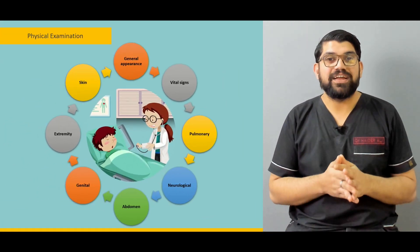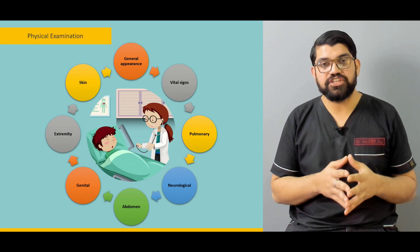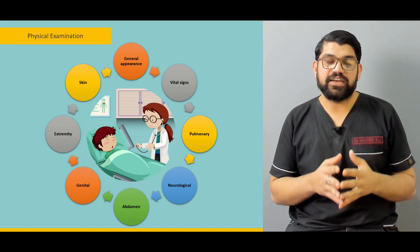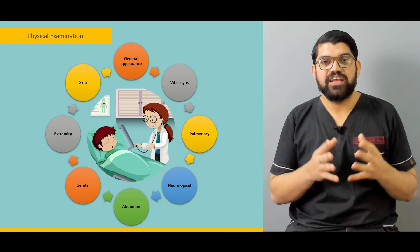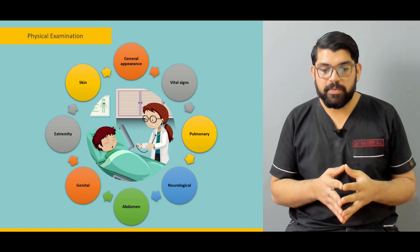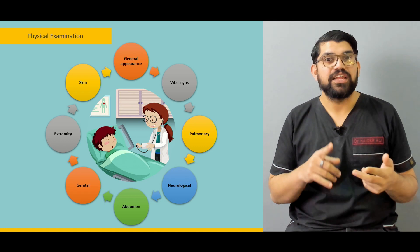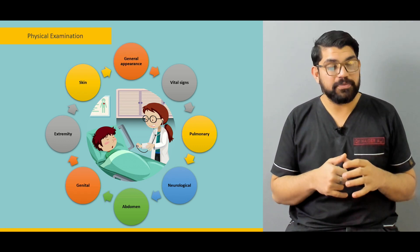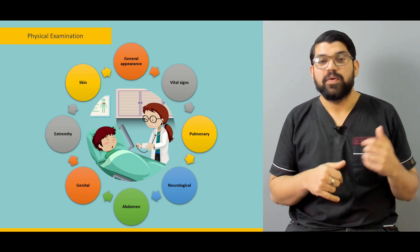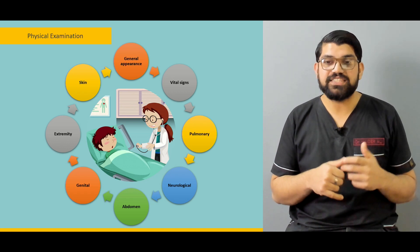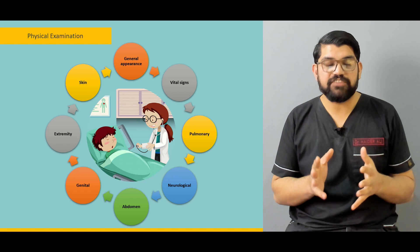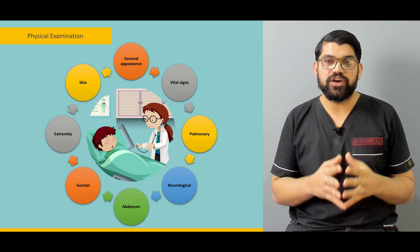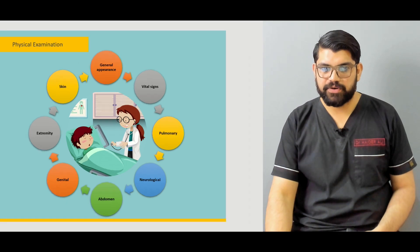Then we'll talk in detail about the physical examination — from general appearance to vital signs, and the organs and systems involved that might cause vomiting. This includes pulmonary, neurological, abdominal examination, genital, extremity examination, and skin. Starting off with general appearance and vital signs: what are their significance and what things as a physician you need to look for while doing this physical examination?